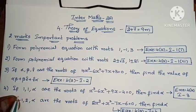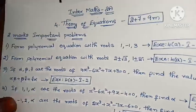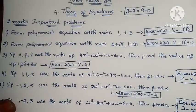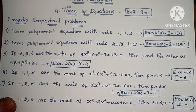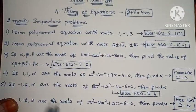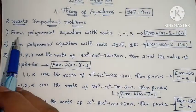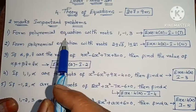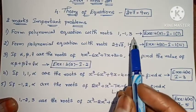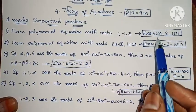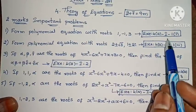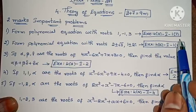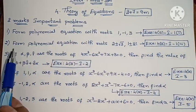Link in the description below — please open the first comment and check the link in the description below. The first 2-mark problem: form a polynomial equation with roots 1, minus 1, 3. Exercise 4A, first Roman numeral, first one.